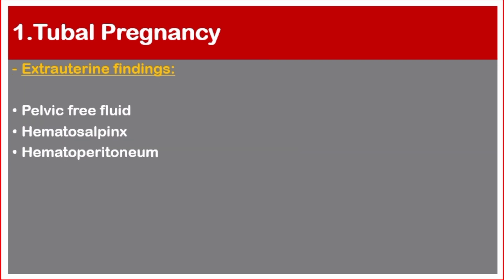In tubal pregnancy, we have covered adnexal findings and endometrial findings. The extra-uterine finding is pelvic free fluid, hematosalpinx, or hemoperitoneum.